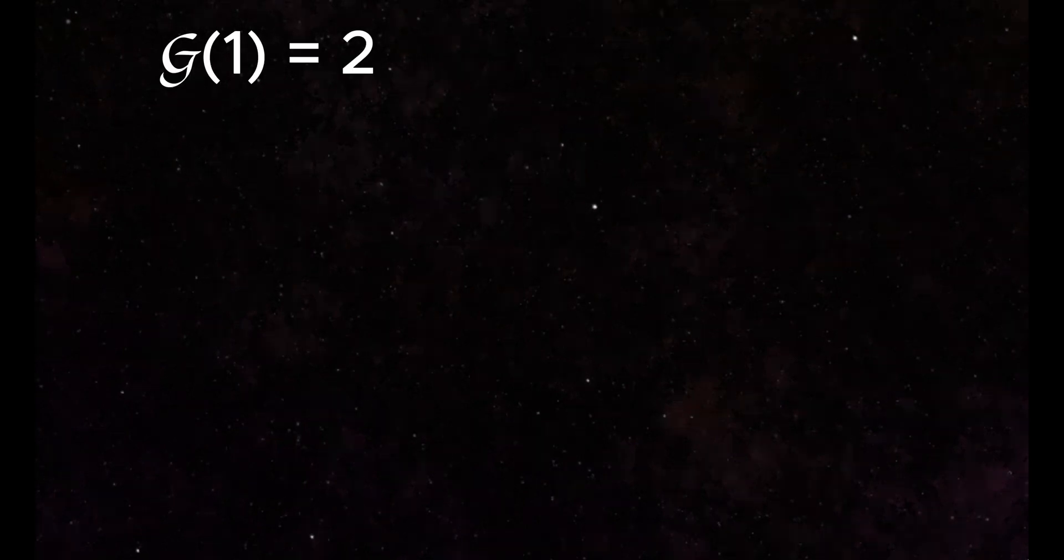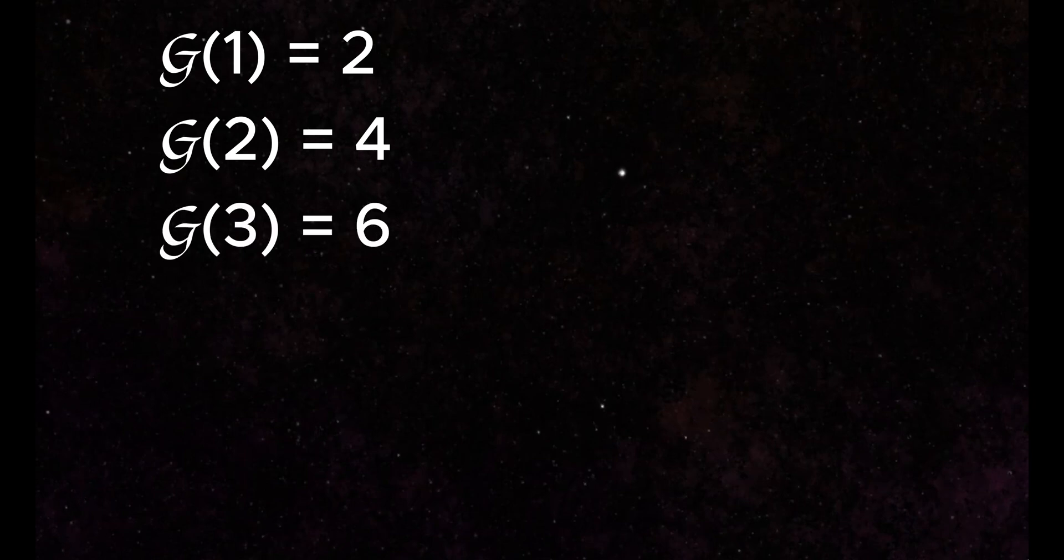Incredibly, Goodstein proved that no matter what number you start with in this sequence, this sequence will always converge to 0, although this will take a very long time for most numbers. The length of steps it takes for a sequence to reach 0 is called the Goodstein function, and it grows extraordinarily fast.